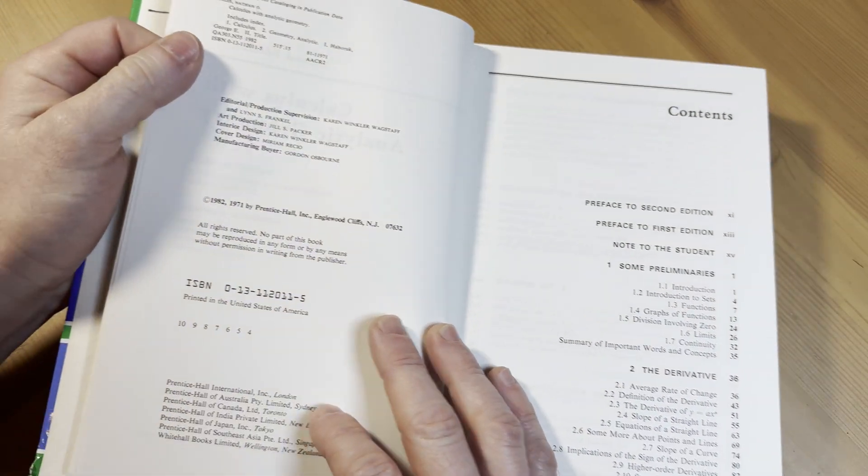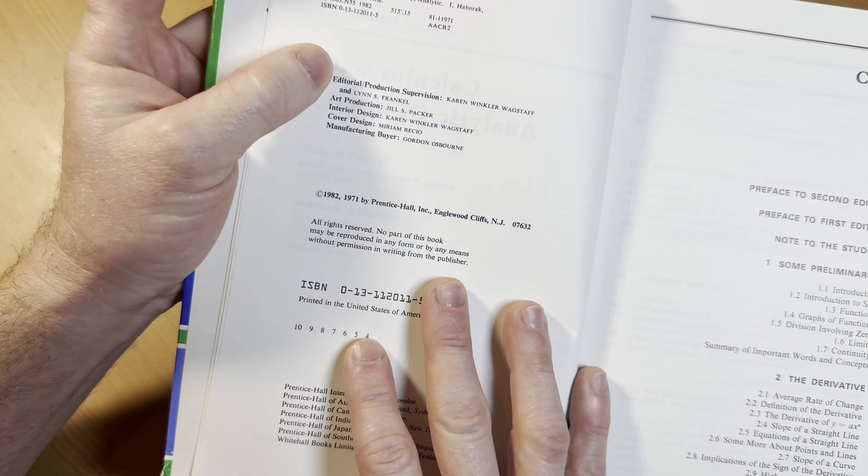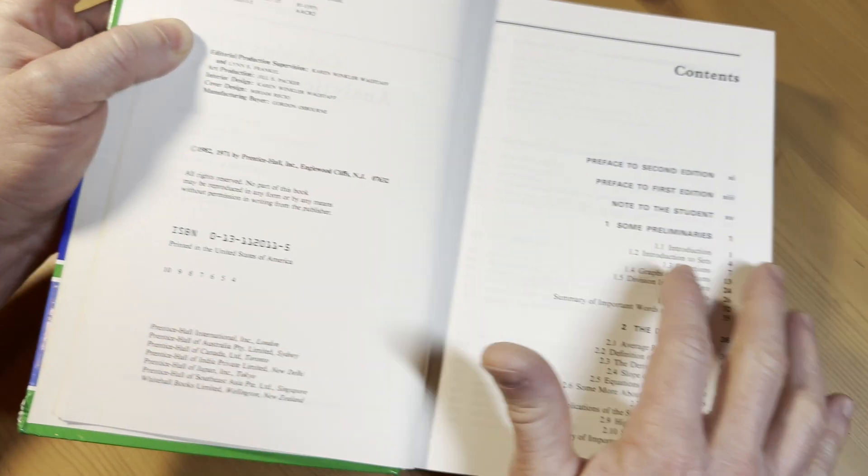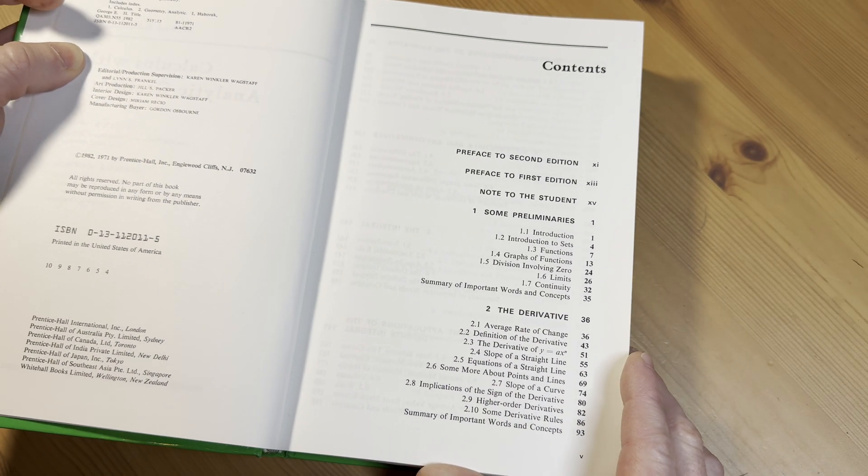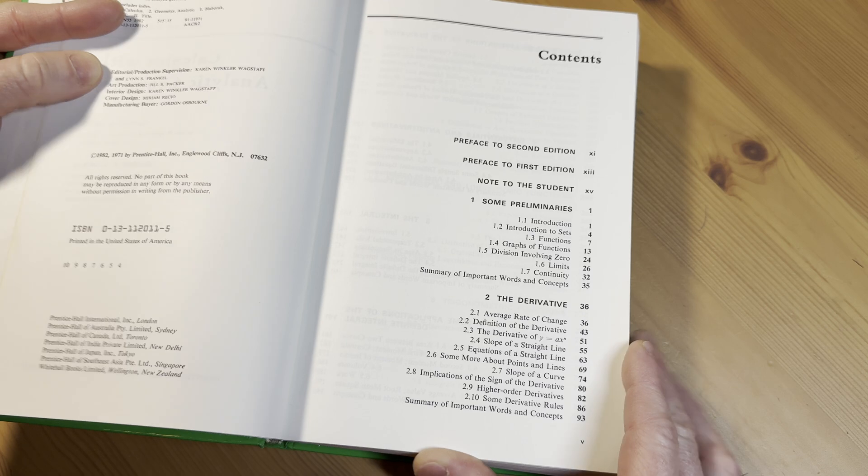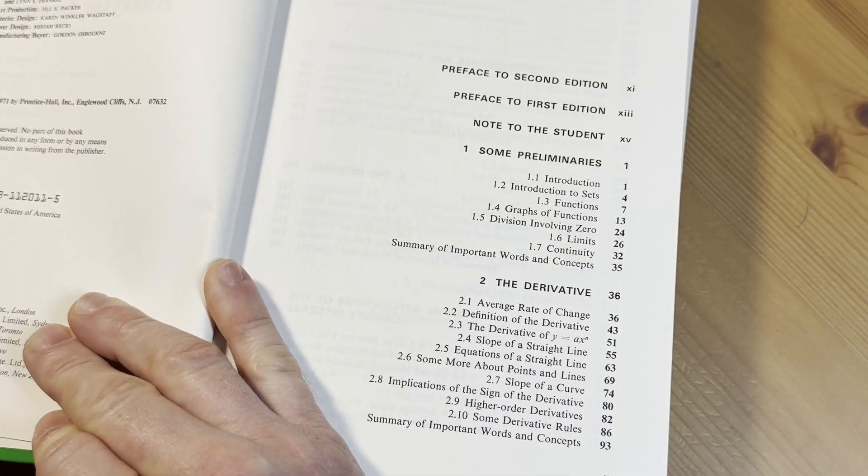Let's check the copyright. So copyright 82 and 71. So there was some considerable time between the two editions. And here are the contents. Let's see what this book actually contains.